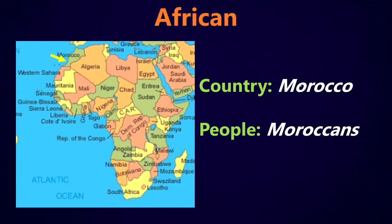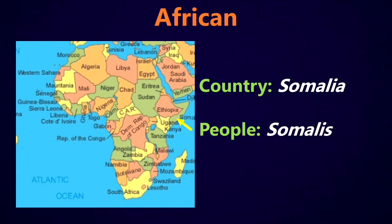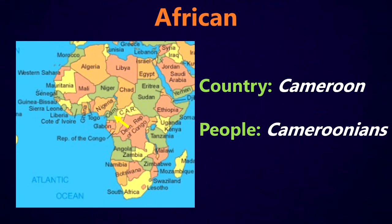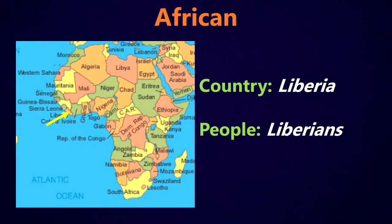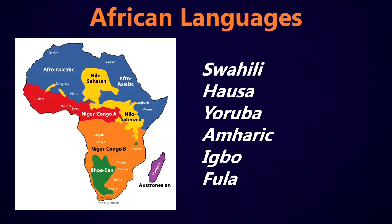If we move over to Africa, we've got, for example, the country of Morocco and the people are the Moroccans. Egypt, the people are the Egyptians. Sudan, the people are the Sudanese. Somalia, the people are Somalis. Ethiopia, the people are Ethiopians. Cameroon, the people are Cameroonians. Liberia, the people are Liberians. Congo, the people are the Congolese. And the African languages, again, are too many to list here. Here are the most common: Swahili, Hausa, Yoruba, Amharic, Igbo, and Fula.